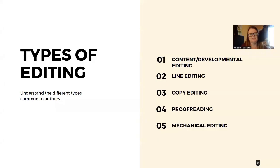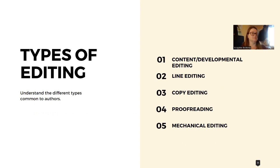So there are different types of editing. The most common ones that we use are the first four, and I threw in number five just as a bonus. We have content or developmental editing — sometimes called either or — then there's line editing, copy editing, proofreading, and mechanical editing.